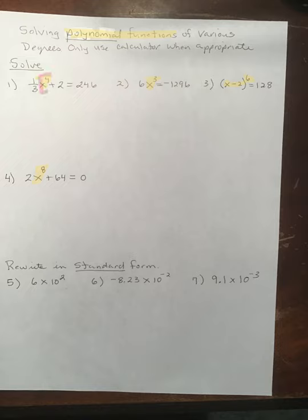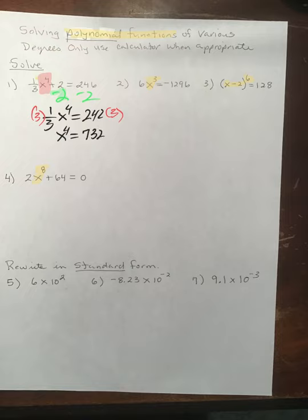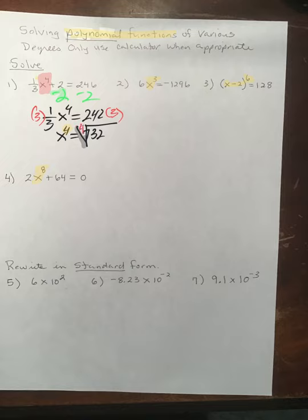You want to use your algebra skills to isolate the polynomial factor — undo everything that's on the outside. So we're going to subtract 2 from both sides, and then multiply both sides by 3. That gives me the polynomial function isolated. Three times 242 is 732, and then I want to undo the fourth power, so I'm going to take the fourth root of both sides. Our index needs to be 4, because the fourth root and the fourth power will undo each other.